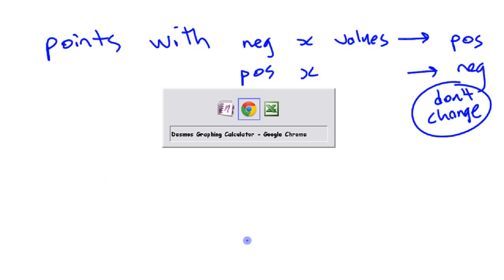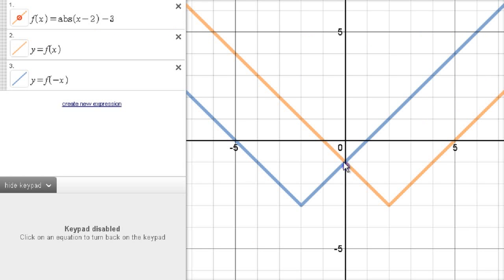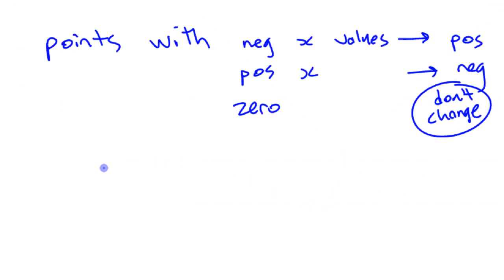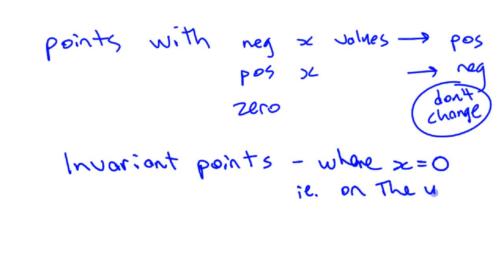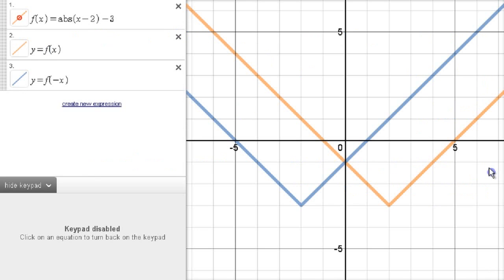Those points that don't change are called invariant points. This point right here is called an invariant point because it doesn't change. Those points are going to be on the y-axis, where x equals zero — in other words, on the y-axis. Those are called invariant points, and that's good to know when talking about different kinds of transformations, including horizontal reflections.